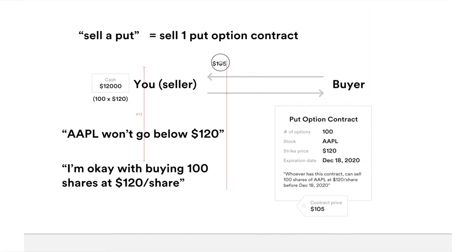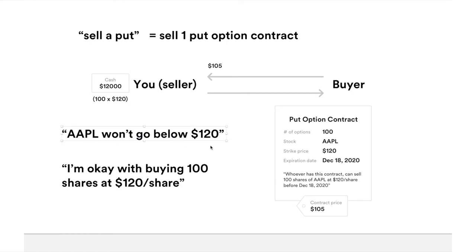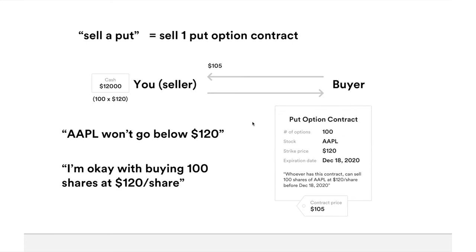In this exchange, you will get $105 because you sell the contract to the buyer and the buyer pays you $105. By selling this put, you're basically thinking Apple is not going to go below $120. Because if it never goes below $120 by the expiration date, this option is useless to the buyer, and you keep all of the $105 premium. Another way to think about this: by selling the put option contract, you're okay with buying 100 shares of Apple at $120, because you always wanted Apple shares and 120 is an acceptable price.